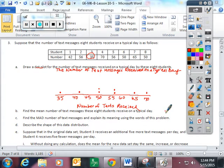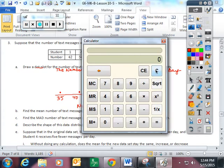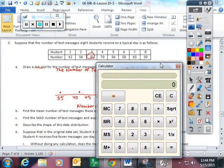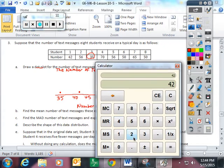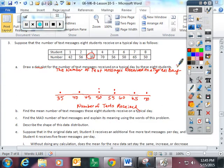Now part B wants me to find the mean. So hopefully you can take out your calculator and you can add 42 plus 56 plus 35 plus 70 plus 56 plus 50 plus 65 plus 50. Now I'm going to divide that by 8, the 8 numbers I added. On average, the typical student receives 53 text messages.